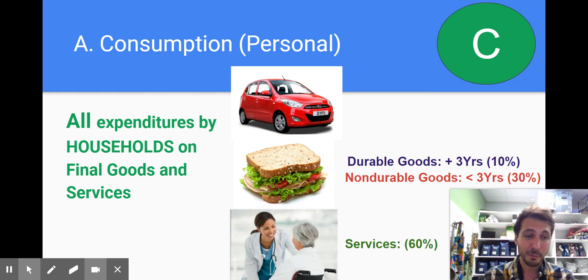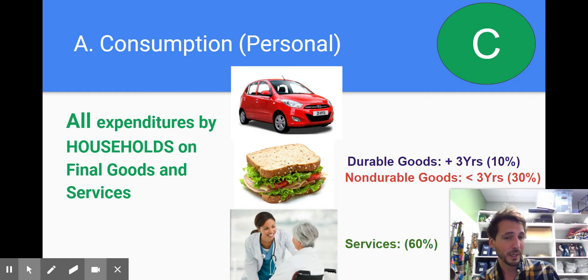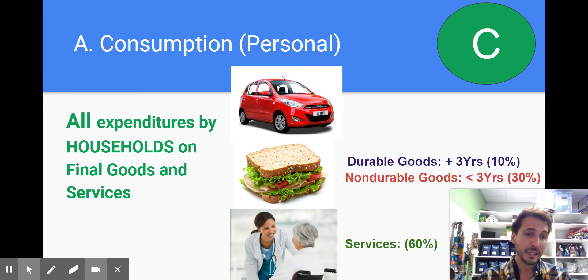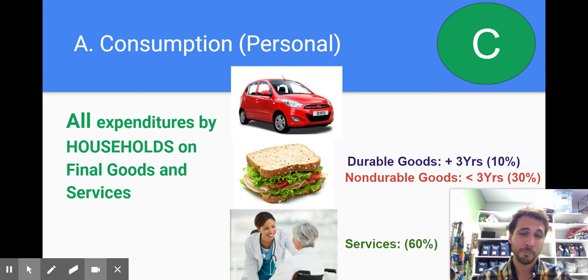If we counted it both times — the lettuce when I bought it, and the sandwich when I sold it — then that would count it twice. So instead, it's just the final good.